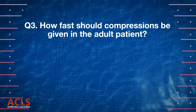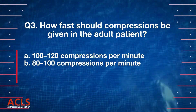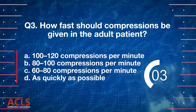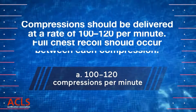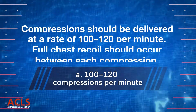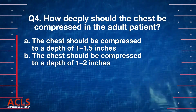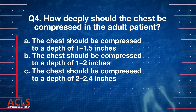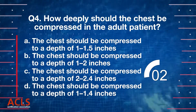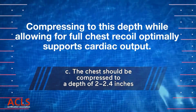How fast should compressions be given in the adult patient? Compressions should be given at a rate of 100 to 120 compressions per minute. How deeply should the chest be compressed in the adult patient? The chest should be compressed to a depth of between 2 and 2.4 inches, about 5 centimeters.